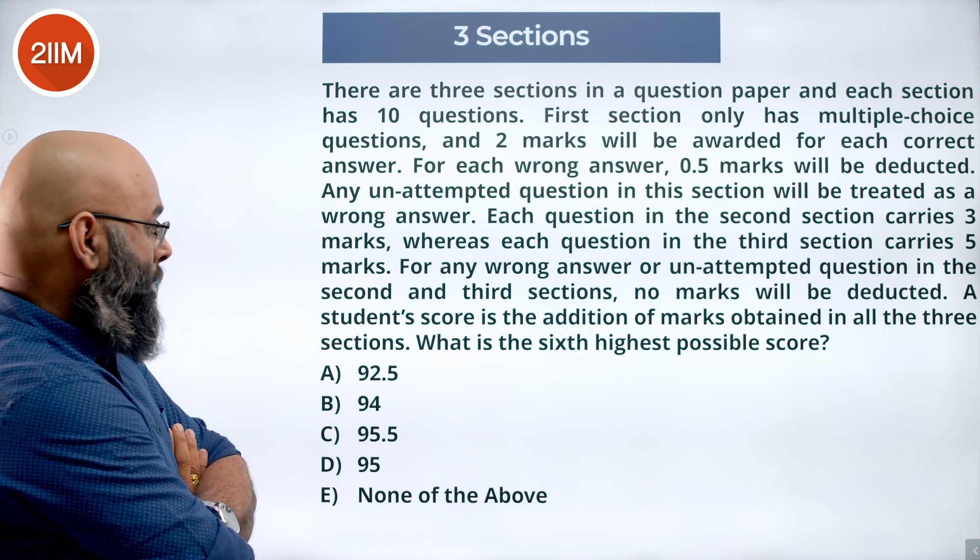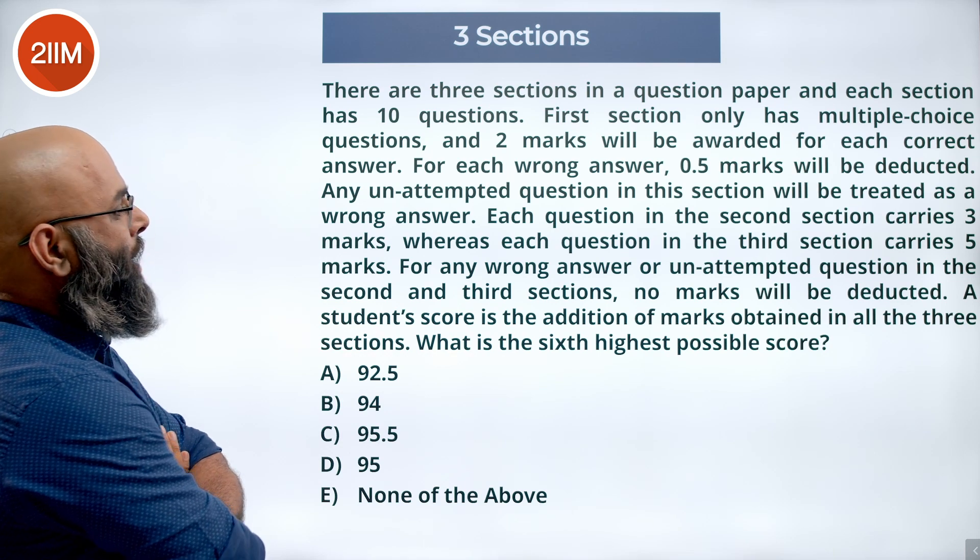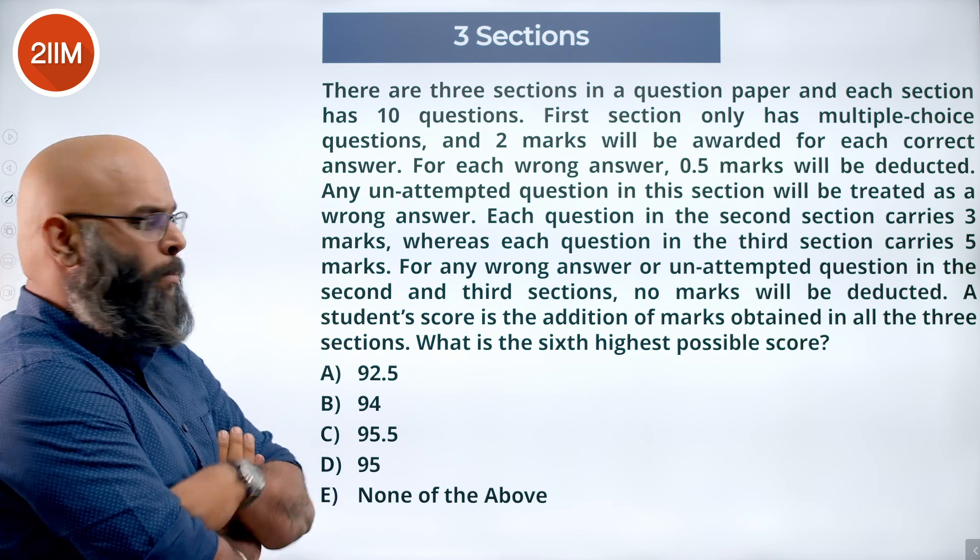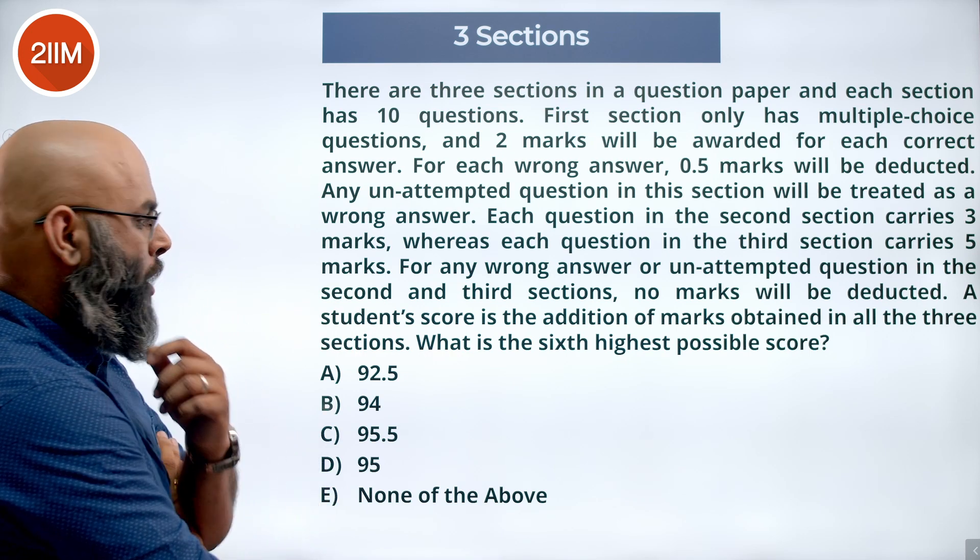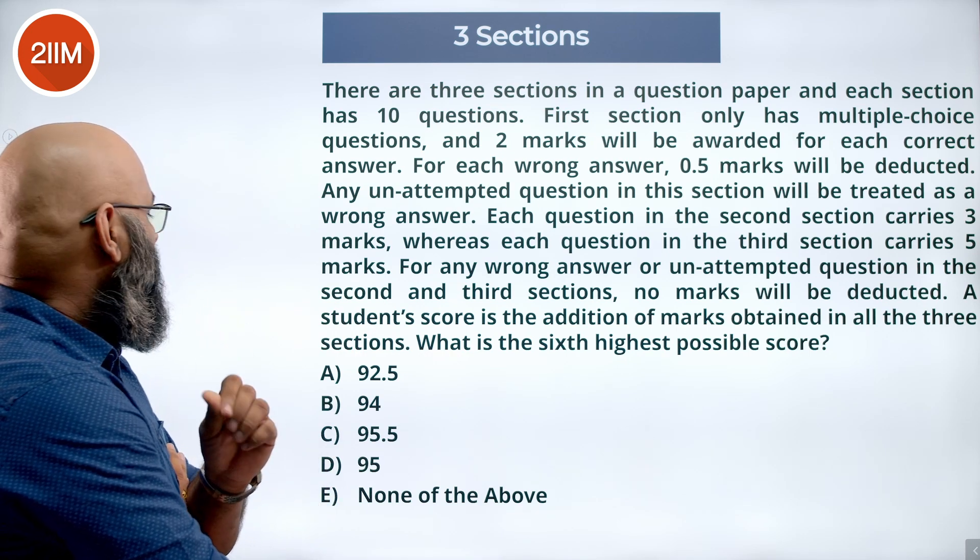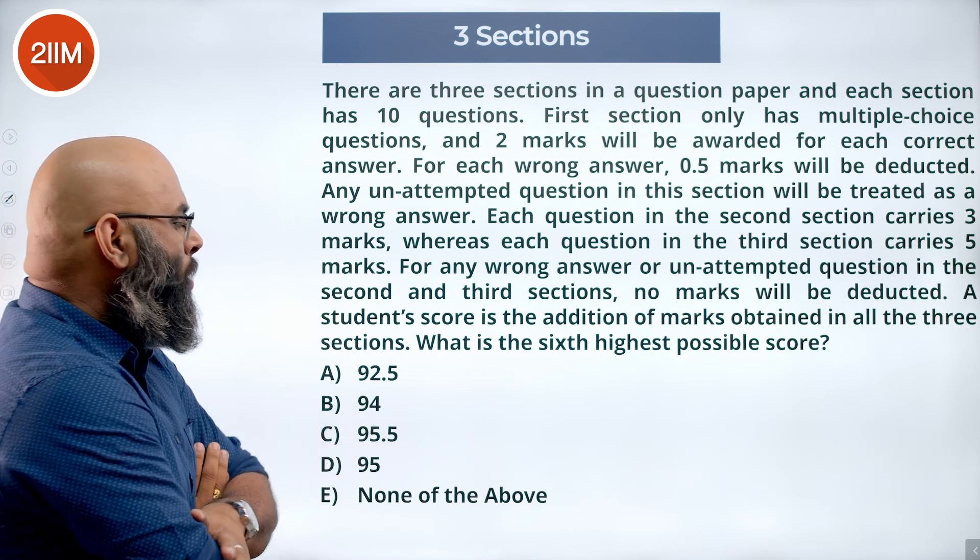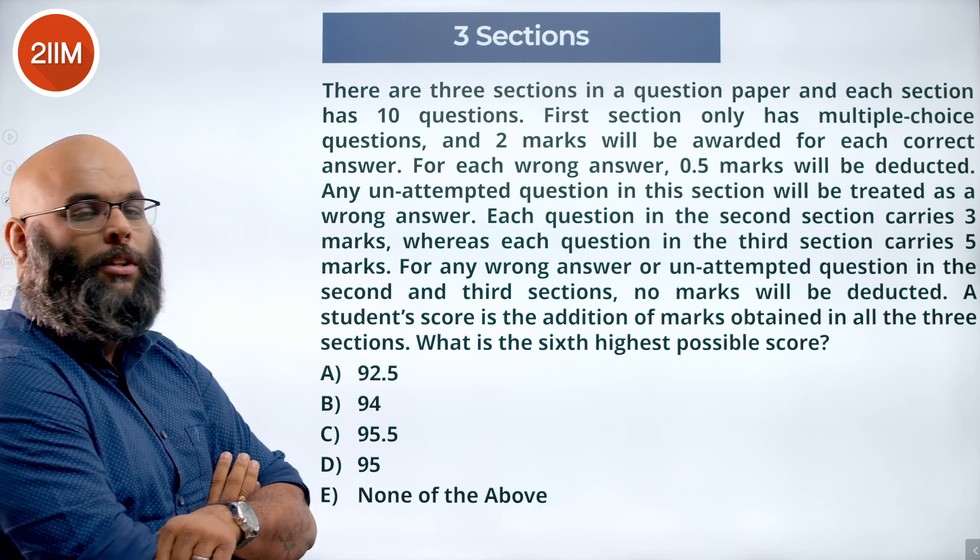Each question in the second section carries 3 marks whereas each question in the third section carries 5 marks. For any wrong answer or unattempted question in the second and third sections, no marks will be deducted. A student's score is the addition of the marks obtained in all three sections. What is the sixth highest possible score?